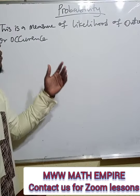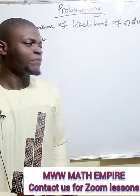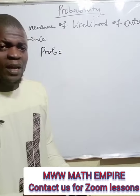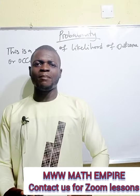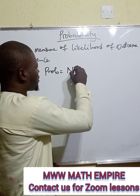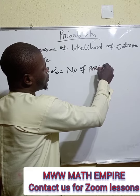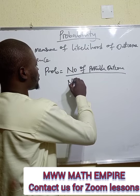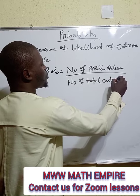Probability is a measure of likelihood of an outcome or occurrence. I call it a game of chance. And when you are talking about probability being a game of chance, it simply means anything can happen. It is a measure of uncertainty and certainty. And its formula is: number of possible or expected outcomes all over number of total outcomes.